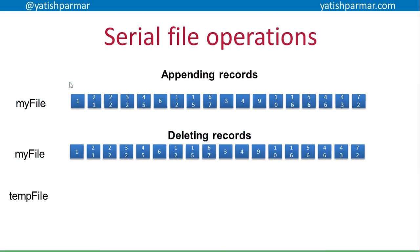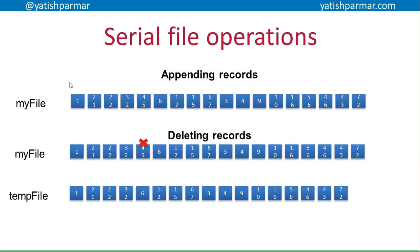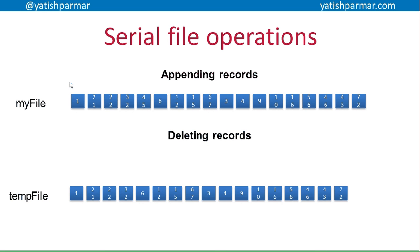Now we want to get rid of a record — the fifth record, which has an ID of 45. We copy over all of the records apart from the one marked for deletion to a new file. I now have all of the data minus that one record. I then delete the old file and rename the temporary file to the original file name. So I now have a file without the record that was marked for deletion.